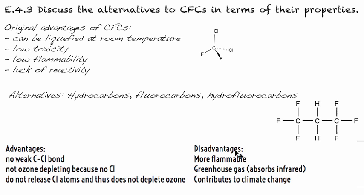The disadvantage is that these tend to be more flammable, especially if you go with the hydrocarbons, and most of these end up being greenhouse gases. Methane, for example, is a greenhouse gas, and that's related to what it absorbs — in this case infrared instead of UV. It also contributes to climate change since it is a greenhouse gas.